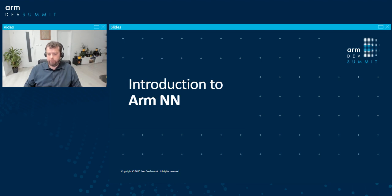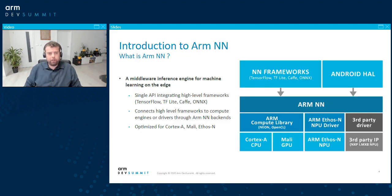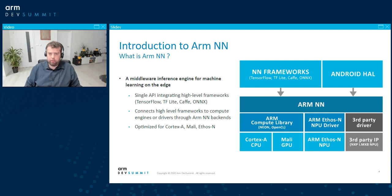So what's ArmNN? ArmNN is a middleware inference engine for machine learning on the edge. I would like to stress the word middleware here, because on the input it takes models from popular frameworks such as TensorFlow, TensorFlow Lite, Caffe, and ONNX, and it mostly delegates these models to the underlying hardware, typically either directly through a driver or through any software like a compute engine.